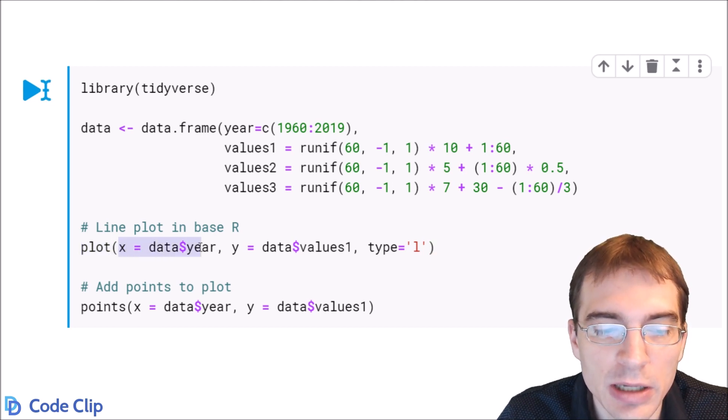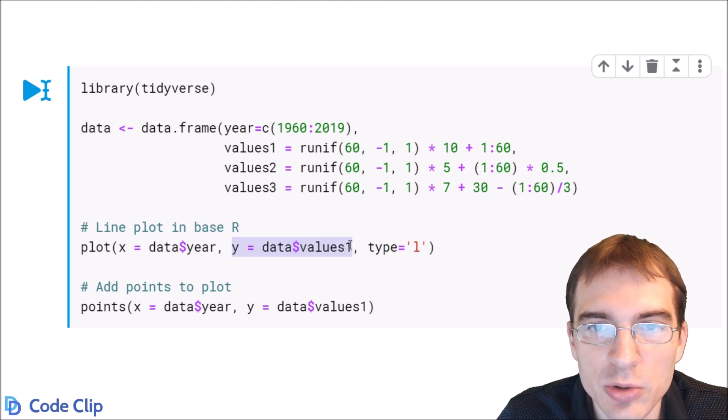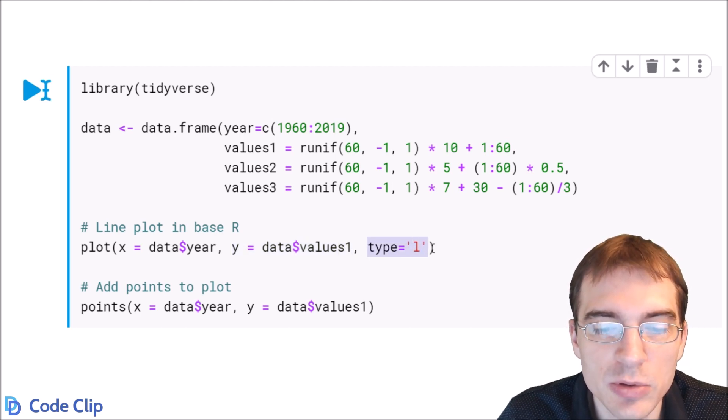Put the year on the x-axis or whatever your time variable is and then put whatever the values you want to plot on the y-axis, and then you just include this extra argument here type equals L and that will change it to a line plot type.